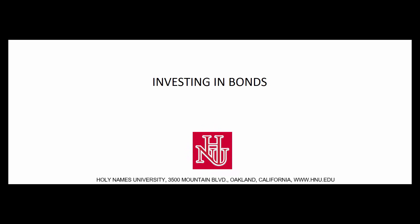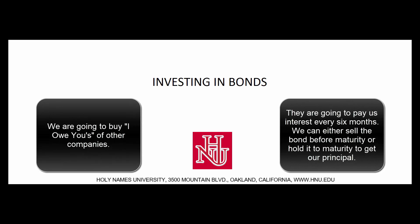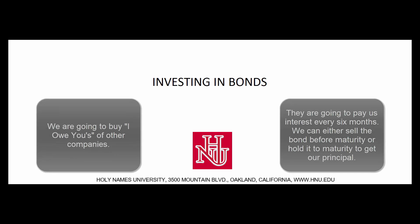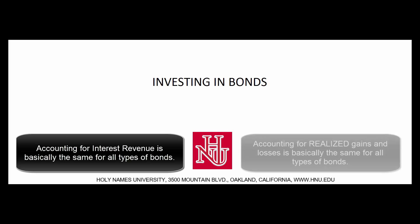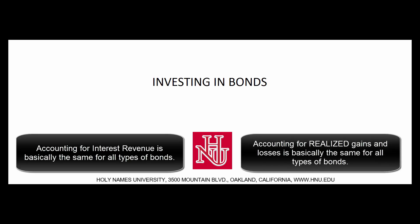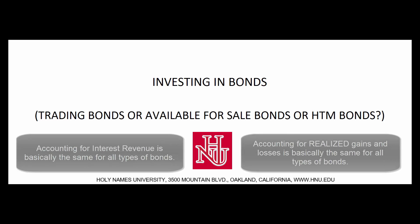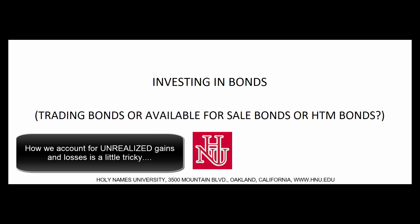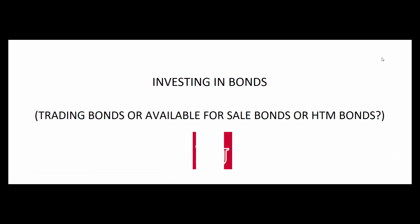Let's talk about investing in bonds. We're going to buy IOUs of other companies. They'll pay us interest semi-annually, and maybe we'll sell those bonds or hold on to them until they mature. How we account for interest revenue is pretty straightforward and the same regardless of the bond. But how we account for unrealized gains and losses will change — depending on whether we call it a trading bond, an available for sale bond, or a held to maturity bond.